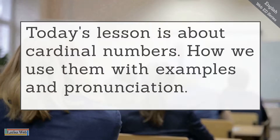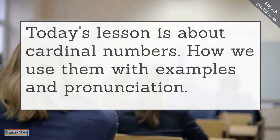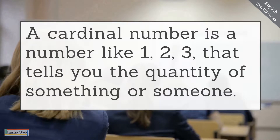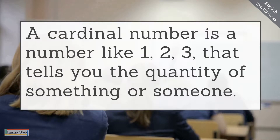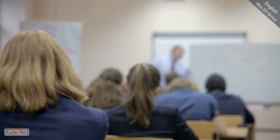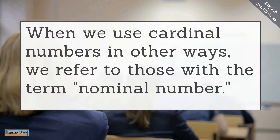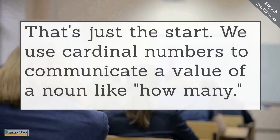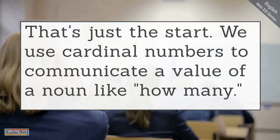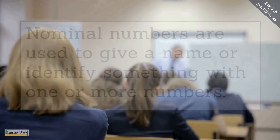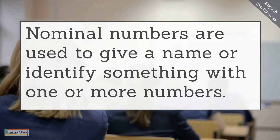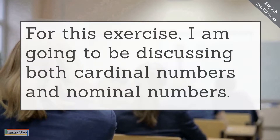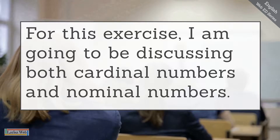Hey everybody, today's lesson is all about cardinal numbers — how we use them with examples and pronunciation. A cardinal number is a number like one, two, three that tells the quantity of something or someone. When we use cardinal numbers in other ways, we refer to those with the term nominal number. We use cardinal numbers to communicate a value of a noun, like how many. Nominal numbers are used to give a name or identify something with one or more numbers.